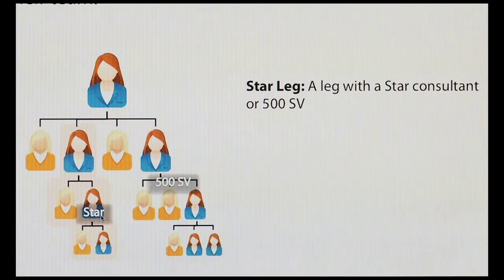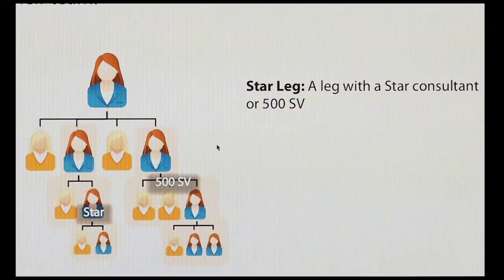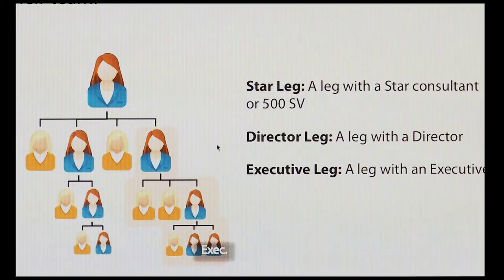A star ranked consultant is changing from what it is now — it's $500 in total sales in that leg. $500 in total sales volume is a star leg. We also have something called a director leg — that's simply a leg that has a director somewhere in it. And we have an executive leg — that's simply a leg with an executive in it.